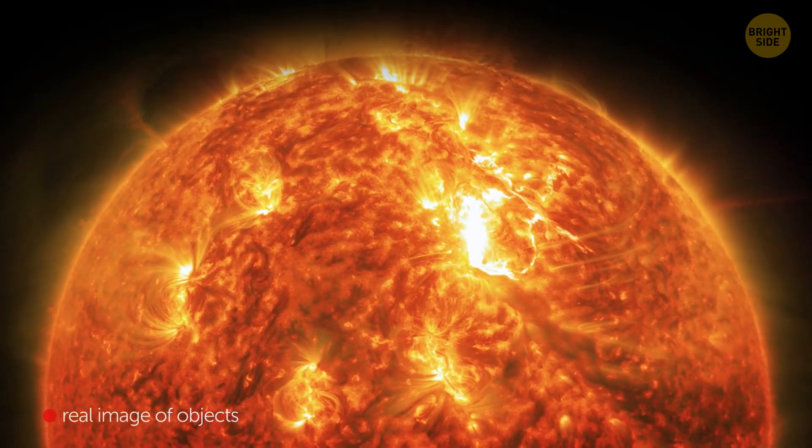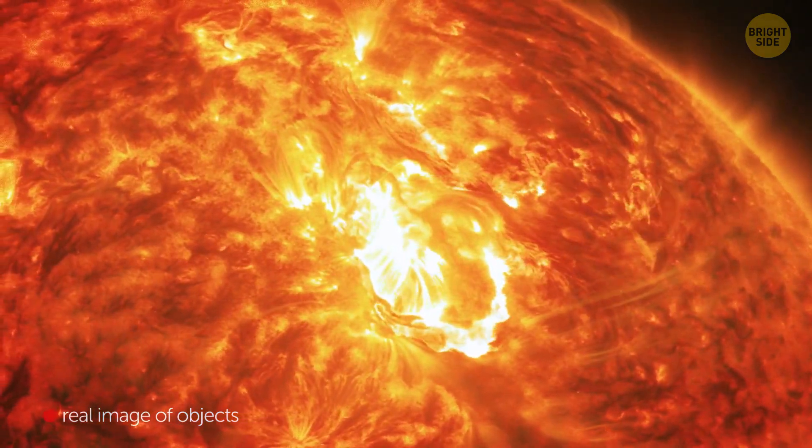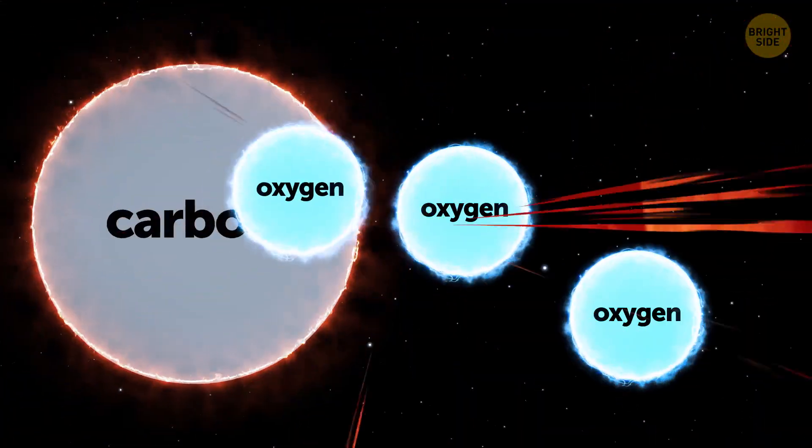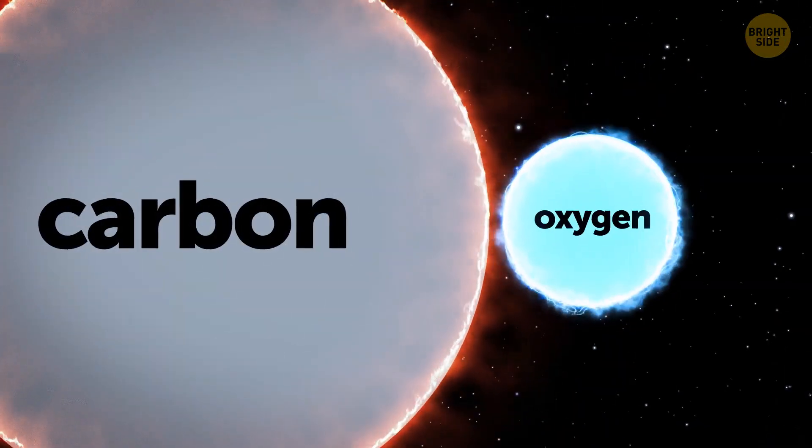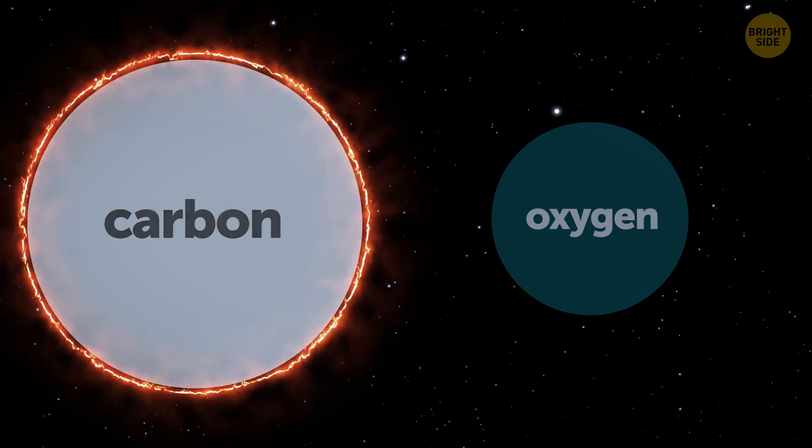The sun can't run out of oxygen or stop burning because it doesn't use oxygen to burn. Regular carbon combustion requires oxygen. As soon as there's no oxygen, the process of burning stops.